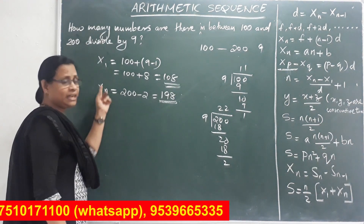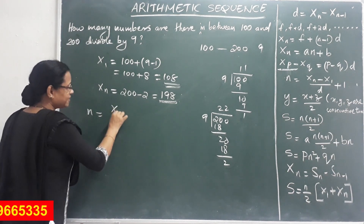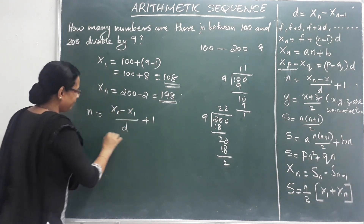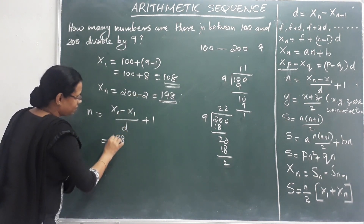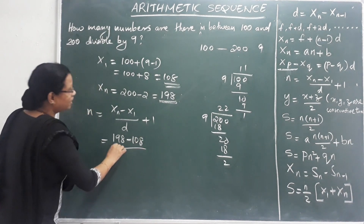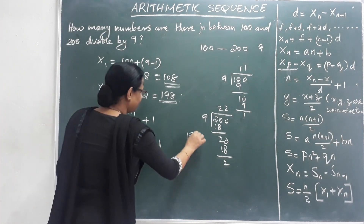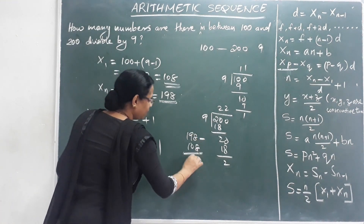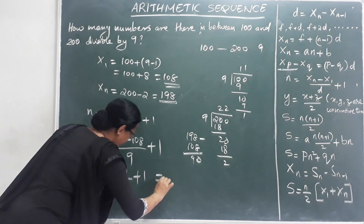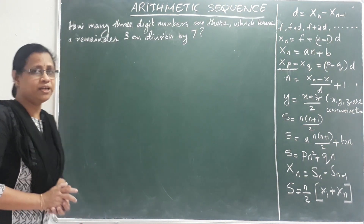Now we have the first term and the last term. The number of terms formula is: xn minus x1 divided by d, plus 1. That is 198 minus 108, divided by 9, plus 1. That is 90 divided by 9 plus 1, equal to 10 plus 1, which is 11. The answer is 11.